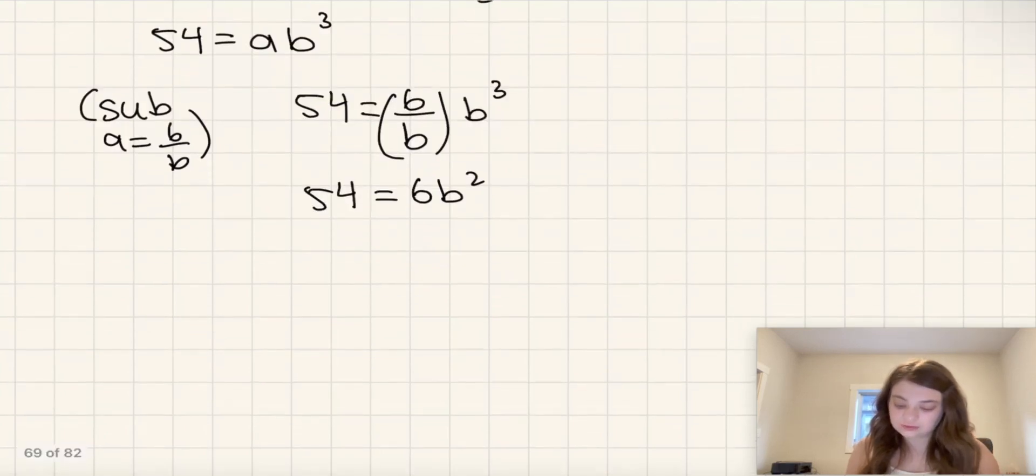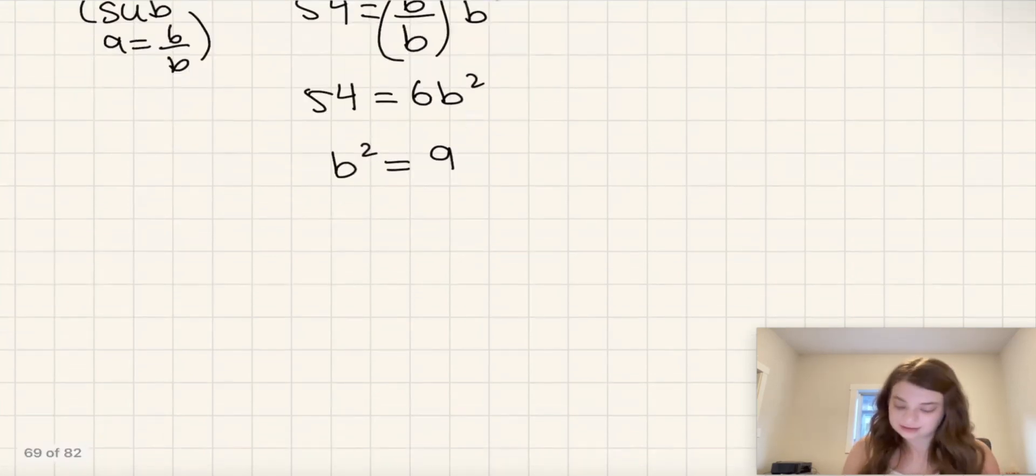And then I'm going to divide by 6. So 9 times 6 is equal to 54. So if we divide both sides by 6, we get that b squared is equal to 9. And that means if we take the square root of both sides, we get that b is equal to 3.